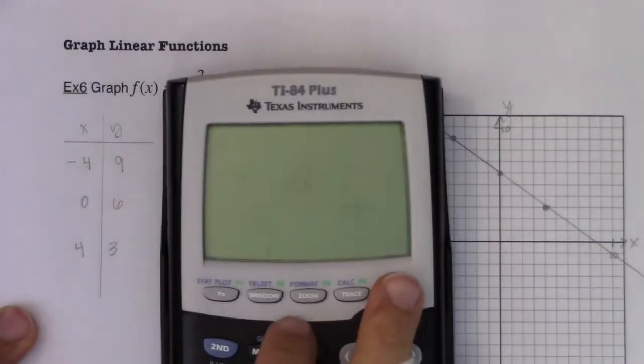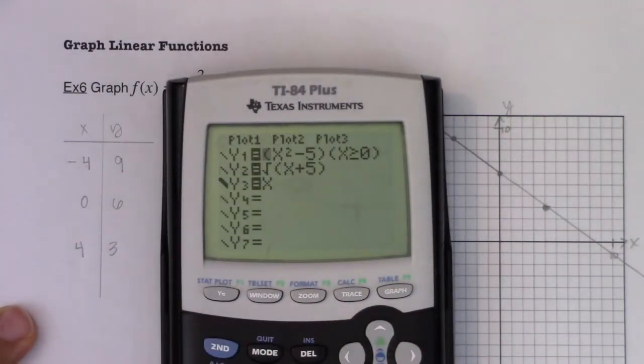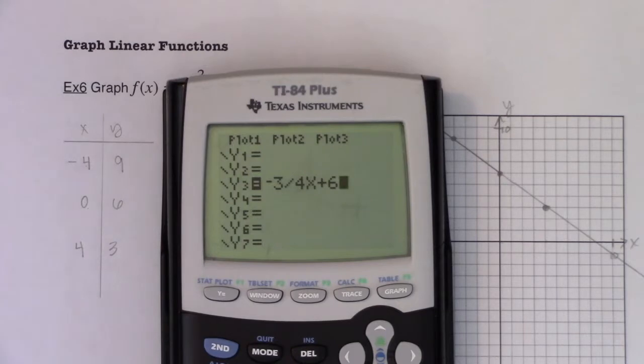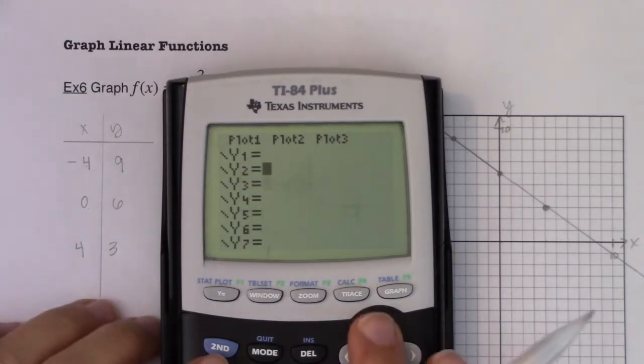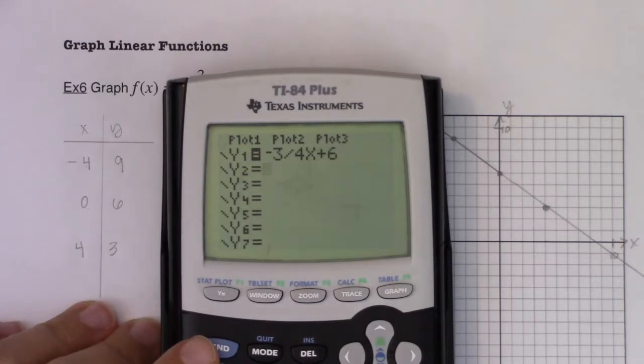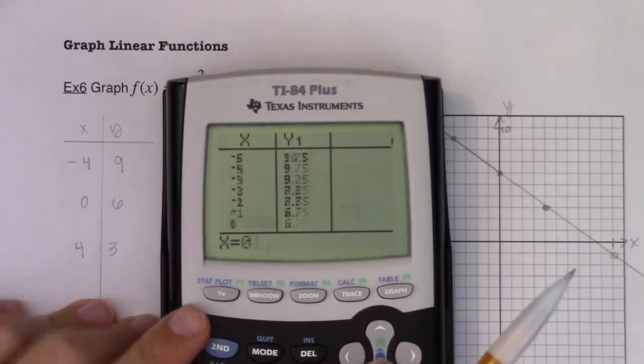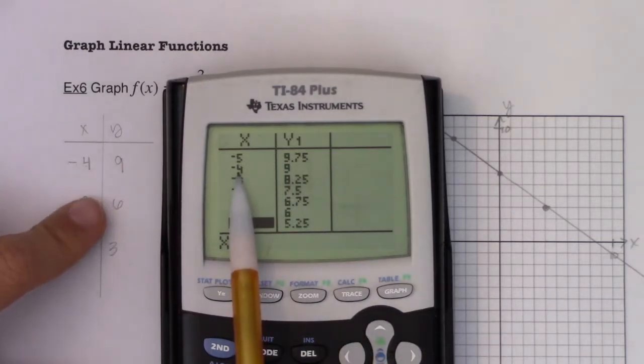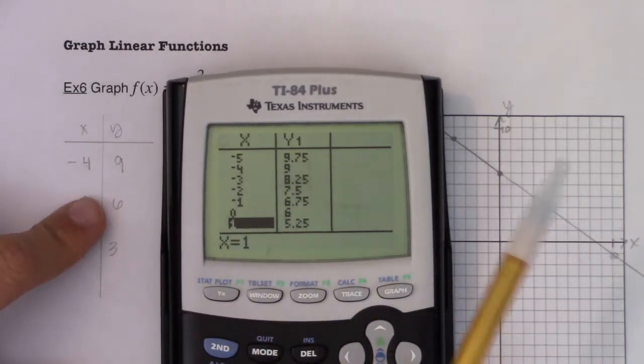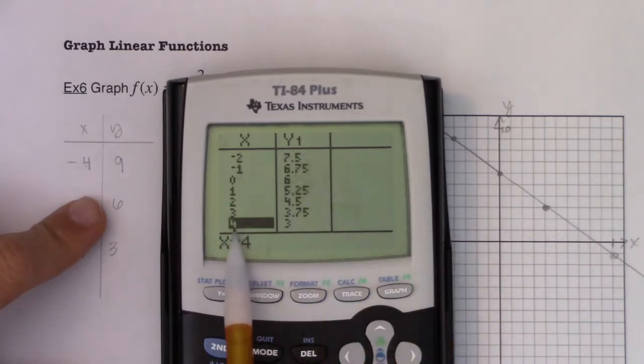Now I've mentioned this before, but it's always worth repeating. If you go to your y equals, let me clear these out and type in my function negative three-fourths x plus six. If you go to your table, you're going to see a bunch of table values. Do we see negative four, nine? I see zero, six. And then I see four, three.